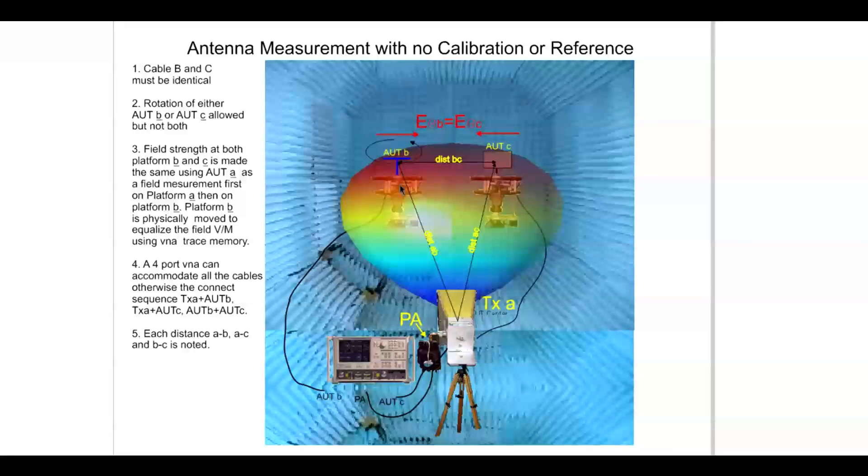Ideally, if the beam is perfectly symmetrical and the platforms were exactly symmetrically located, we would have exactly the same field strength. However, this is something that rarely happens. To overcome this, we would move the AUT C platform and change its distance as necessary until the contours overlap to a sufficient accuracy on the VNA.